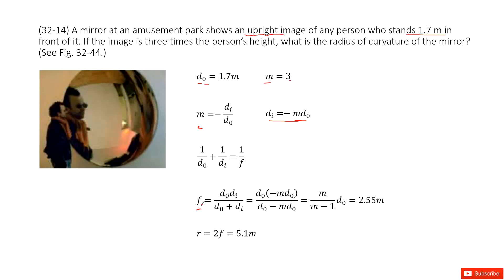This is the focal length. So focal length f equals D0 times Di over D0 plus Di. We input Di inside and simplify this function. In this term, M is given and D0 is given, so we input M and D0 and get the answer.